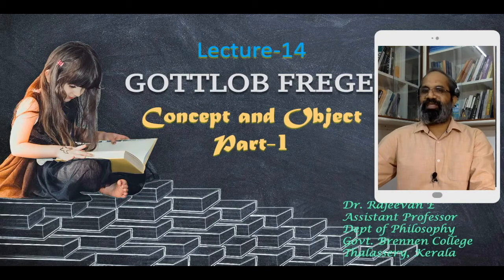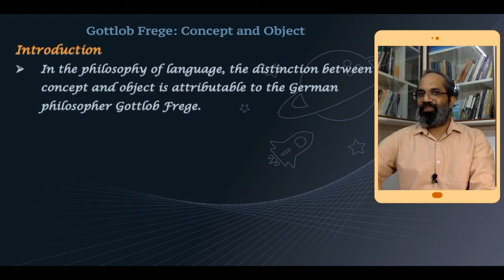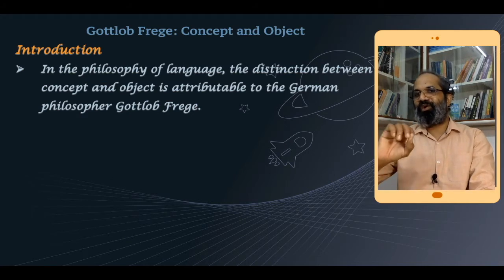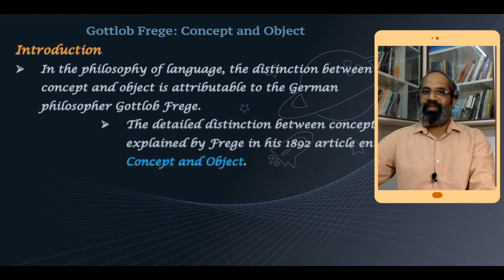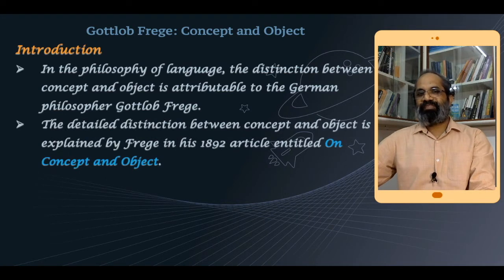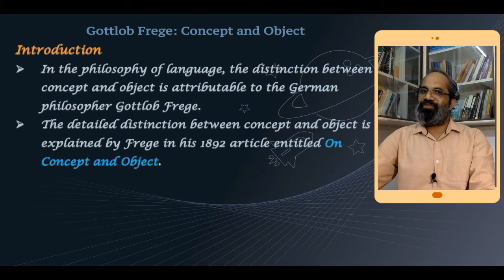The essay is named 'On Concept and Object.' In the philosophy of language, the distinction between concept and object is attributable to the German philosopher Gottlob Frege. He differentiated between two functions of a term or word when it occurs in a proposition — how one and the same term can function either as a concept or as an object. This distinction is explained in his 1892 article titled 'On Concept and Object.'